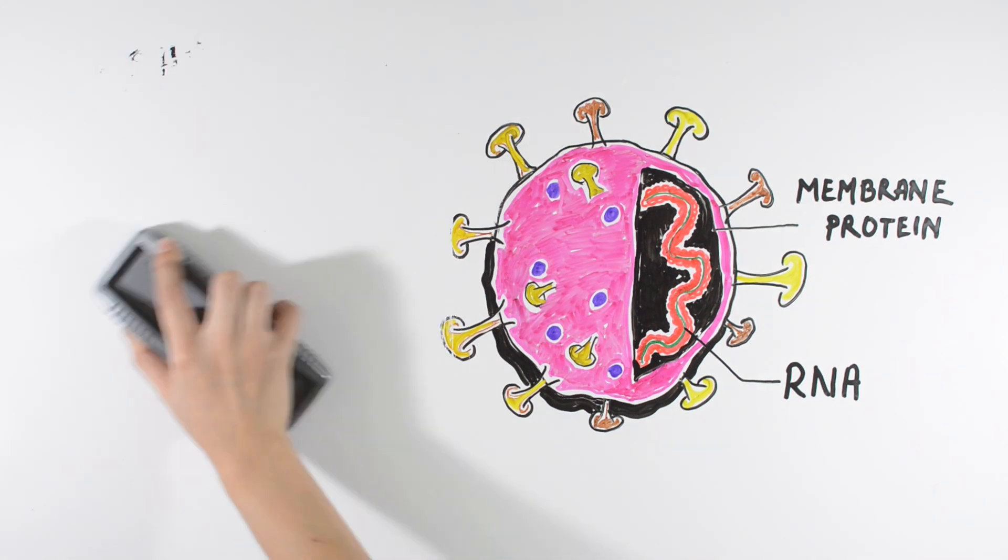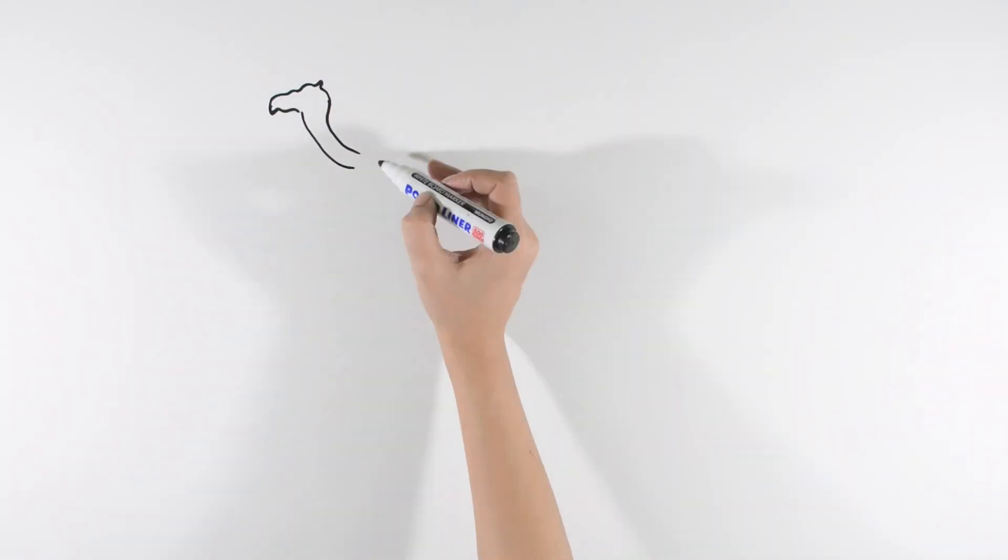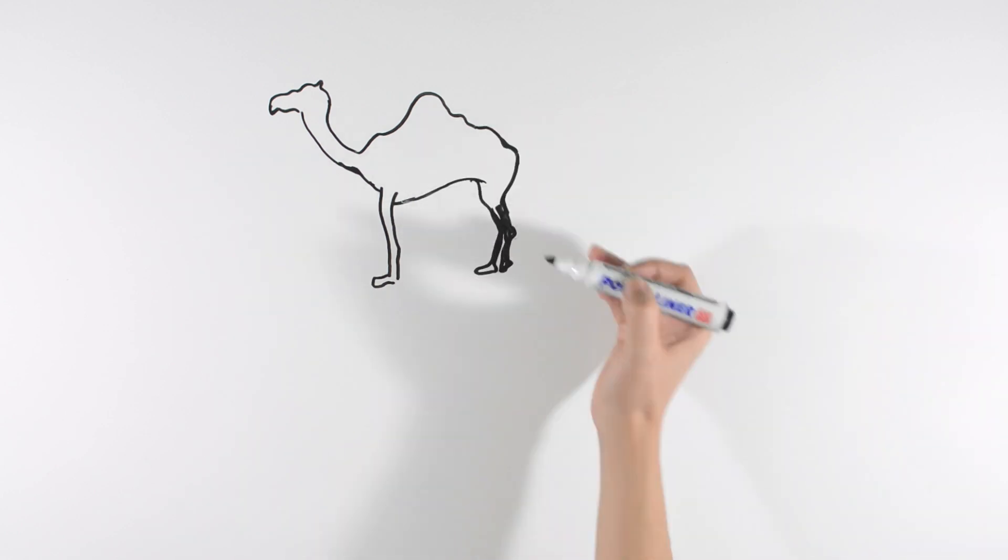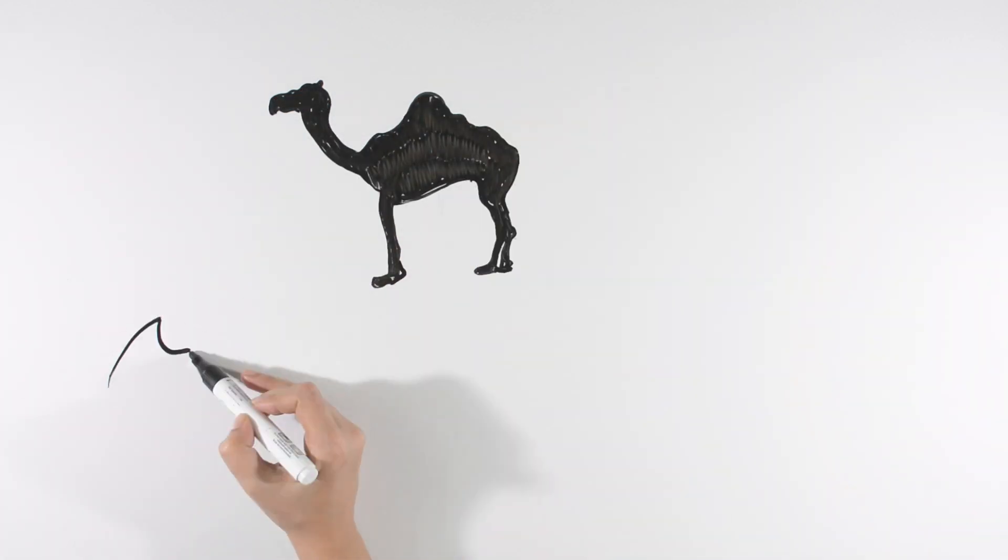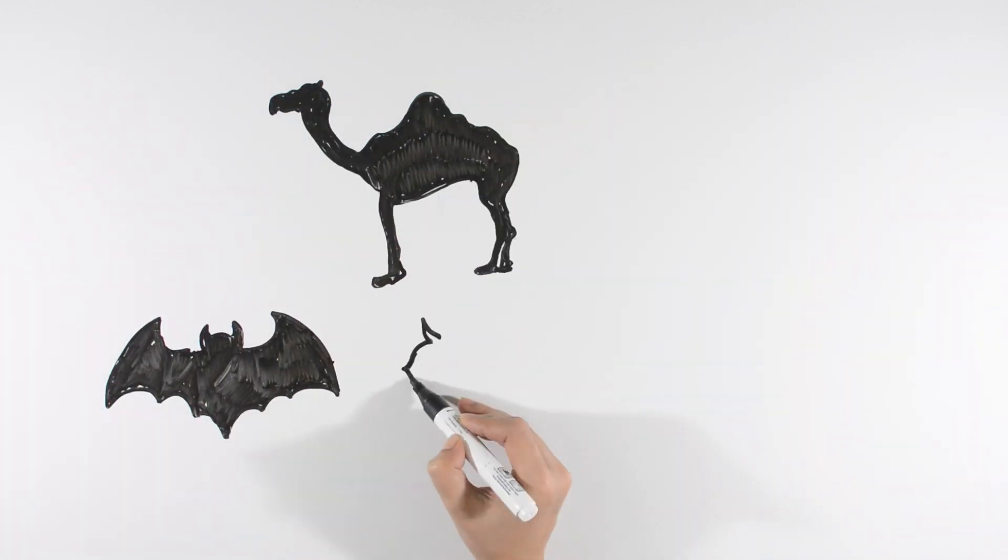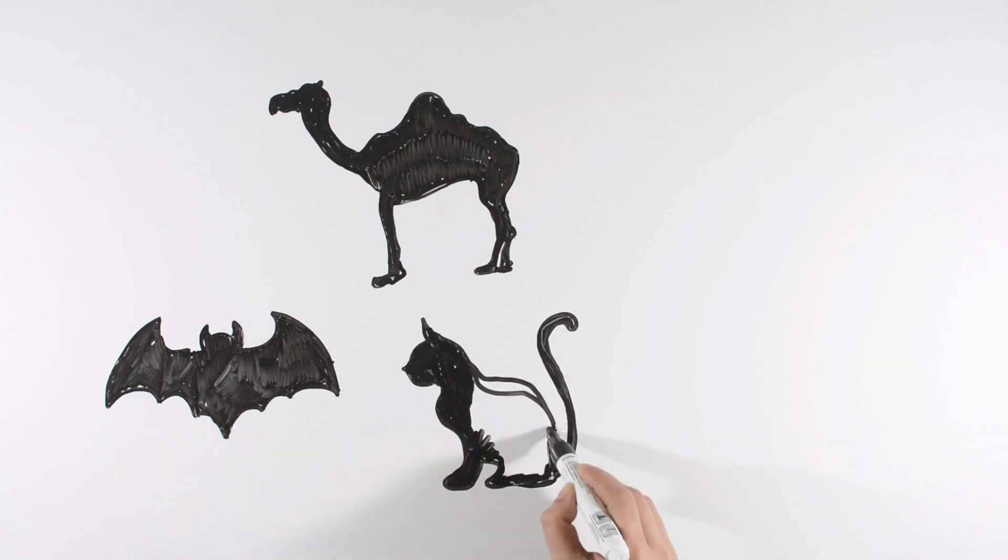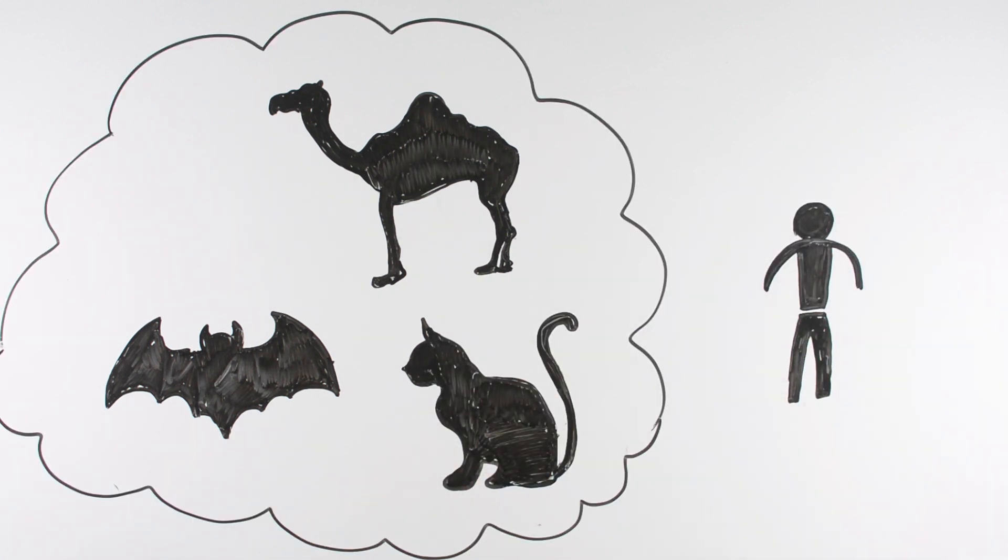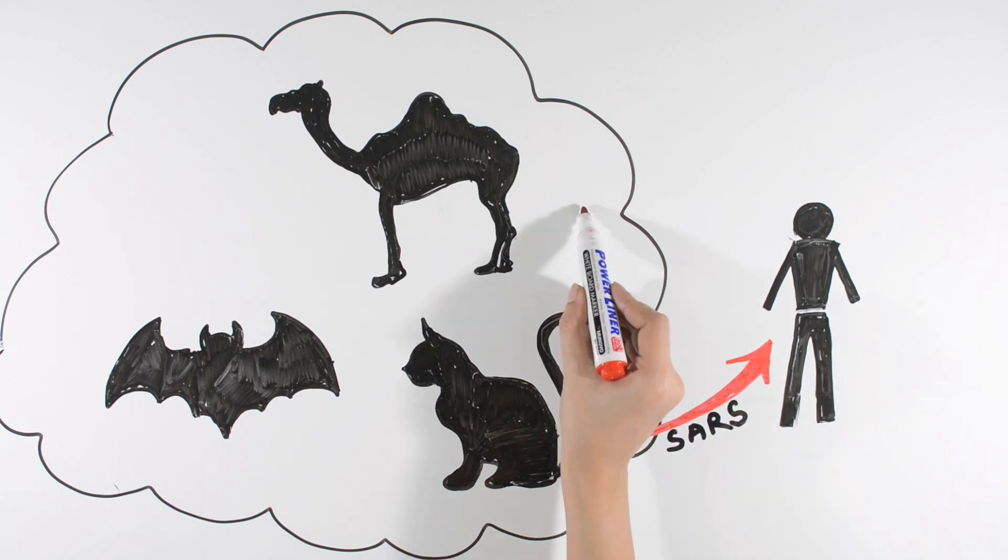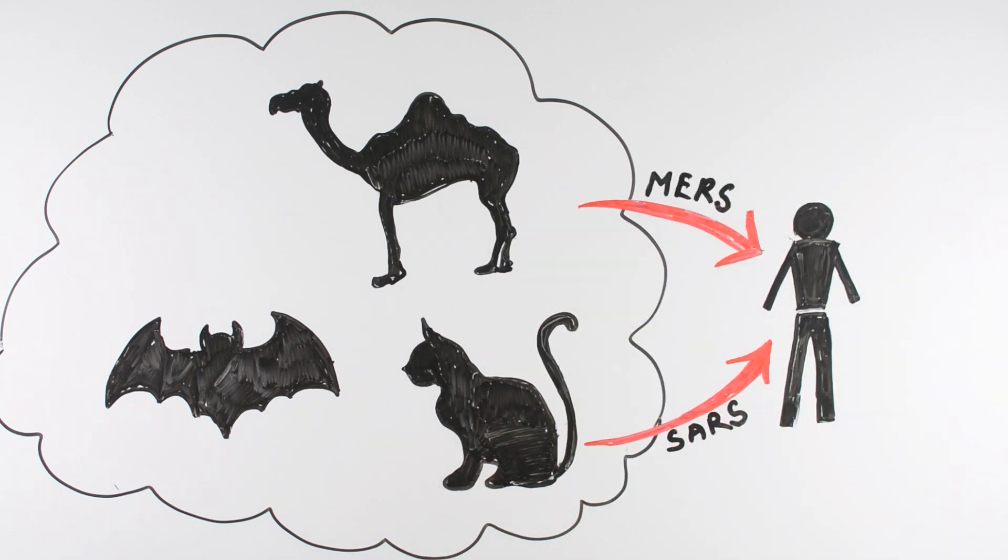So where did this virus come from? These viruses are normally found in animal species like camels, cattle, cats, and bats, but they can come to humans due to mutations or due to increased contact between animals and humans. For example, SARS have been transmitted from civet cats to humans while MERS transmitted from a type of camel to humans. But the 2019 novel coronavirus origin is not known yet.